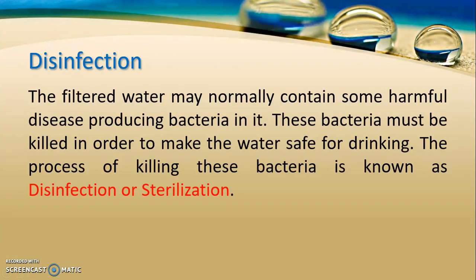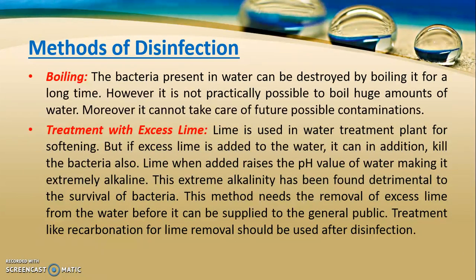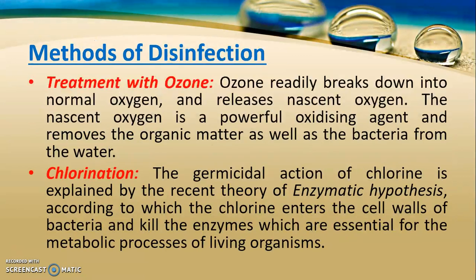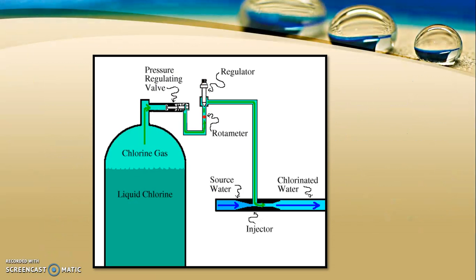After filtration comes the disinfection process. In a water treatment plant, much of the bacteria is not removed in a rapid sand filter due to its limited efficiency. Disinfection is the process of killing bacteria present in the water. There are different methods of disinfection: boiling (used in households especially during rainy seasons), treating with lime, treating with ozone, and chlorination. Boiling is not practically feasible for large quantities in a water treatment plant, so chlorination — using chlorine gas — is the most common method used.